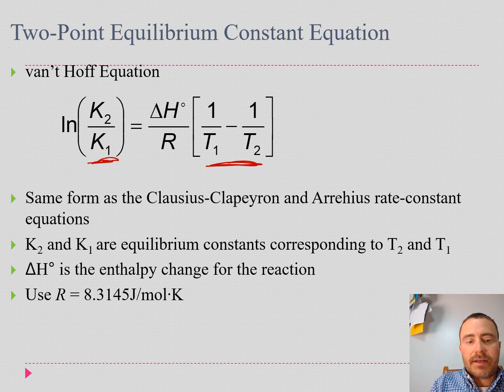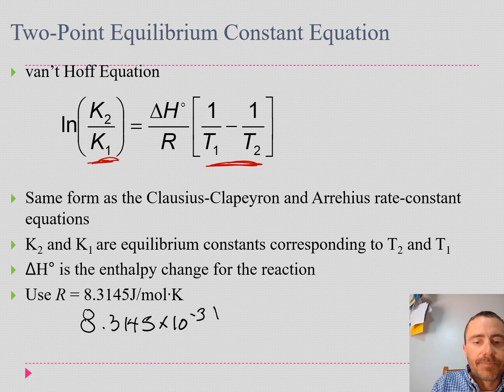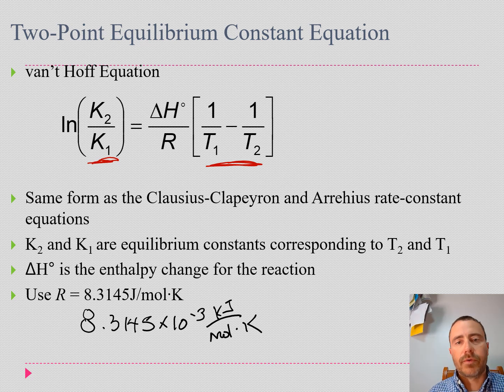In this case, those are going to give us enthalpy changes. We just need to make sure that we're using the correct value for R. Our R is 8.3145 joules per mole kelvin, or 8.3145 times 10 to the minus third kilojoules per mole kelvin, depending on whether we want our answer to be in joules or kilojoules.